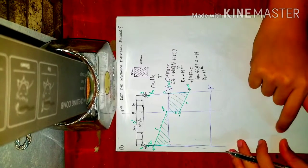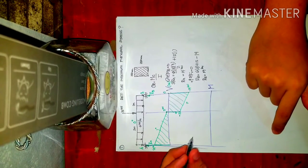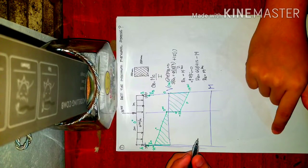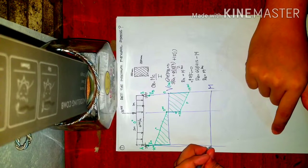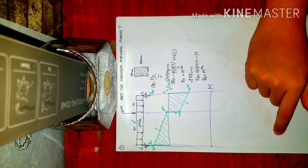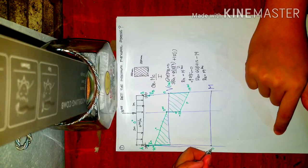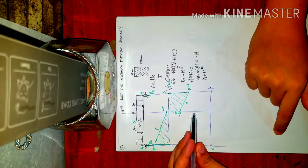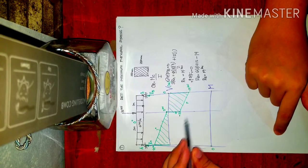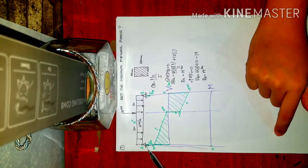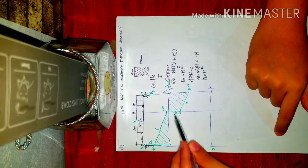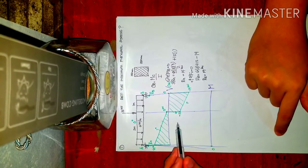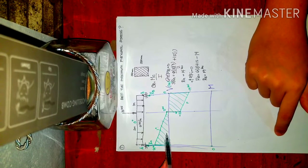Next is the moment diagram. The general rule is that at a simple support, the moment is zero. So we start at zero at point A. We need to compute the area of the trapezoid formed in the shear diagram between A and the concentrated load. Coming from a first-degree shear curve, the moment curve will be second degree — a parabola.